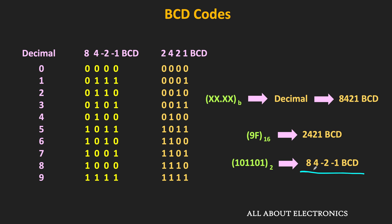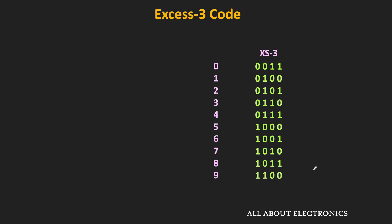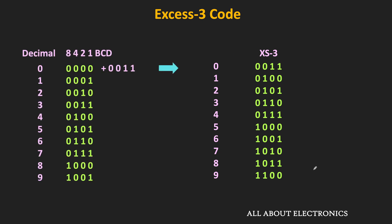All the BCD codes we have discussed so far are weighted codes, meaning they all follow the position weighting principle. But the XS3 code is a non-weighted code — it does not obey the position weighting principle. This is how the decimal digits 0 to 9 are represented in this XS3 code. As we saw in the previous video, just by adding 3 to each BCD code, we get the equivalent XS3 code. This XS3 code is also a sequential code, meaning if we see the difference between any two binary codes it is equal to 1 — or in other words, if we just add 1 to a particular code, we get the next code.